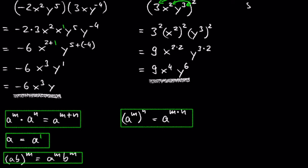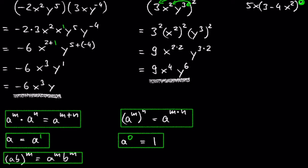Let's look at 5x times 3 minus 4x squared, raised to the power of 0. We can use the law of the zero exponent, which tells us that every non-zero number raised to the power of 0 equals 1. So 3 minus 4x squared raised to 0 just equals 1, and we get 5x times 1, which is equal to 5x.